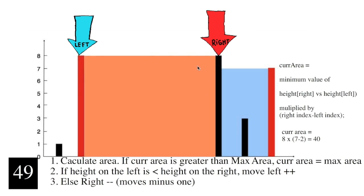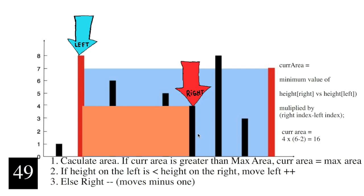Now we calculate our current area. The height of the right versus the height of the left — they're both 8. The right index is 7 minus the left index 2, so the value is 40. 40 is not greater than 49. The height on the left is not greater than the height on the right, so we move the right index to the left. We calculate area the same way: the minimum height is 4, and the index is 6 minus 2 — four times four is 16, not greater than 49. The right height is less than the left, so we move right to the left again.